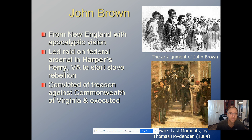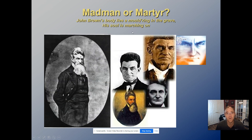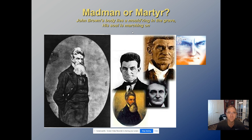John Brown was convicted of treason and executed, but then became a very different figure depending on where you were. The South viewed him as an outright madman and became convinced that the North was sending radicals to start a civil war, making the South more defensive of their system. The North, however, celebrated him as a man willing to die for a cause — they wrote poems and songs about him, including the famous 'John Brown's Body,' popular during the Civil War.